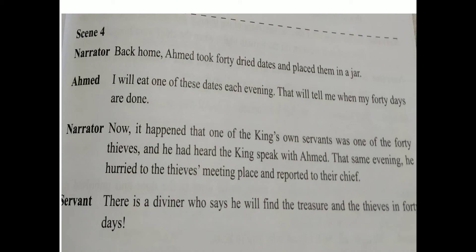Scene 4. Narrator: Back home, Ahmed took forty dried dates and placed them in a jar. Ahmed said: 'I will eat one of these dates each evening — that will tell me when my forty days are done.' Now it happened that one of the king's own servants was one of the forty thieves. He had heard the king speak with Ahmed. That same evening, he hurried to the thieves' meeting place and reported to the chief. Servant: 'There is a diviner who says he will find the treasure and the thieves in forty days.'